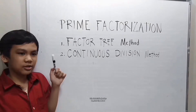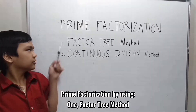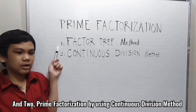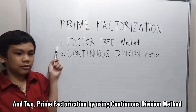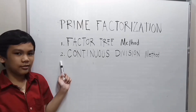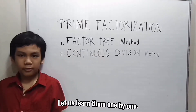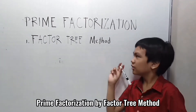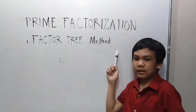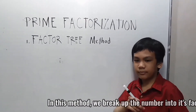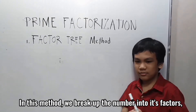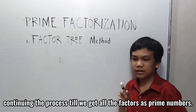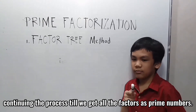First, prime factorization by using the factor tree method. And two, prime factorization by using the continuous division method. Let's learn them one by one. In the factor tree method, we break up the number into its factors, continuing the process until we get all the factors as prime numbers.